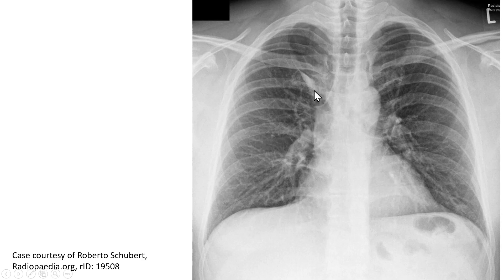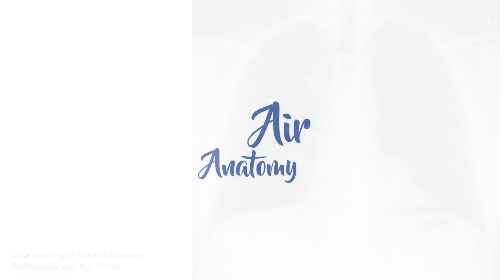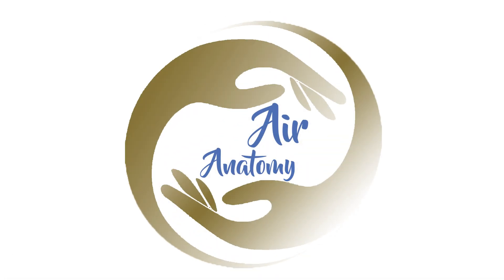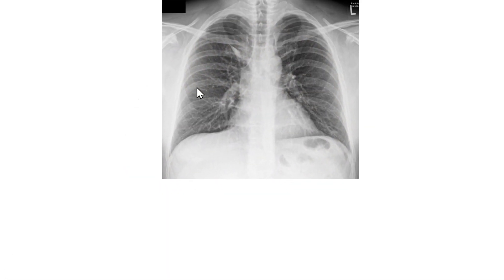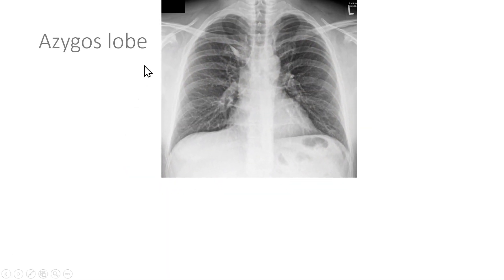In this chest X-ray, what is this and what is this anomaly called? Hello and welcome to the Air Anatomy channel. Today we will learn about the azygos lobe. What you see here is known as the azygos lobe anomaly.